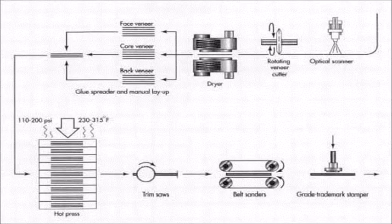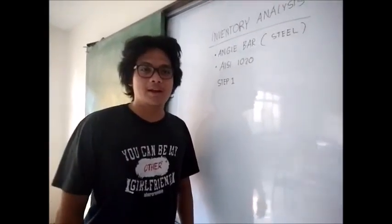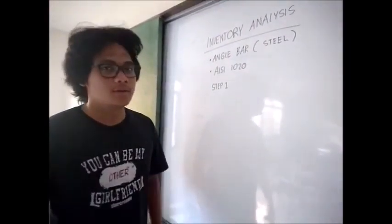Then the wood will be cut into standard length, dried in a dryer, stuck together three or five sheets at a time, pressed together and heated up, then trimmed to a standard size. Then the wood is ready for buyers. The next material in our inventory analysis is the frame. The material used is the angle bar, and the type of material used in making the steel bar is IC-1020.